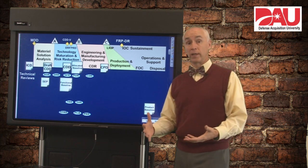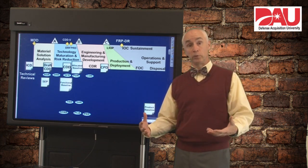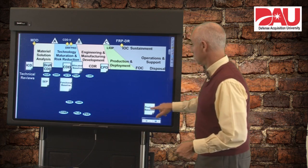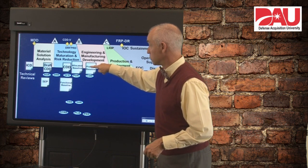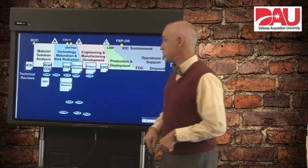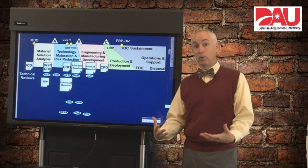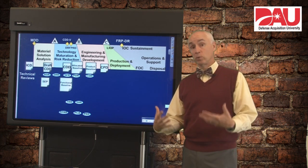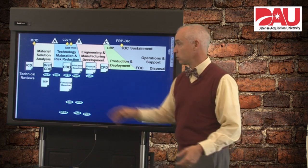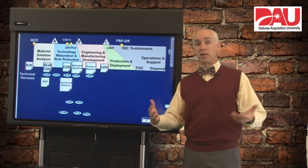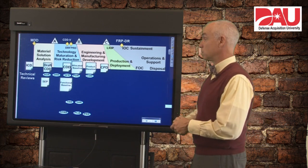At the CDR, what we're looking at is the detailed, final produce-to, build-to design for our system. At that point, we're establishing a product baseline for the system in the middle of engineering and manufacturing development. That gives us a design we can use to build production or deployment representative prototypes — better prototypes than we had earlier — which we can then test in the operational environment to make sure they work before we start actually producing the system. We can also prove out our production processes at the same time.